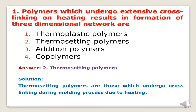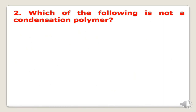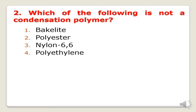Next question: which of the following is not a condensation polymer? Condensation polymerization takes place in a stepwise manner with elimination of a by-product. The four options are bakelite, polyester, nylon-66, and polyethylene. Bakelite is formed by condensation reaction between phenol and formaldehyde. Polyester is a condensation polymer formed from ethylene glycol and terephthalic acid. Nylon-66 is a condensation polymer from hexamethylenediamine and adipic acid. Polyethylene is formed by simple addition polymerization of ethylene, so the correct answer is polyethylene.